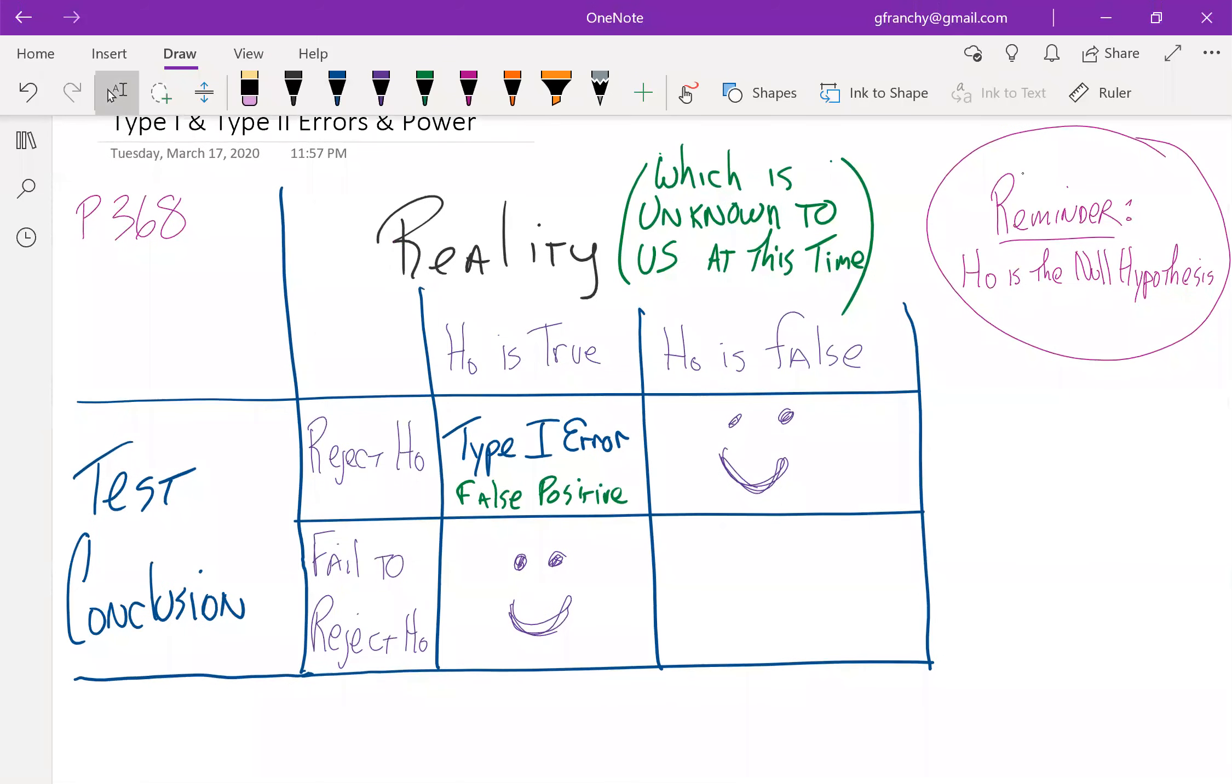And the other one is when we fail to reject the null hypothesis, but we should have. This is known as a Type II error.